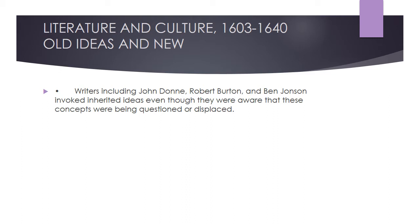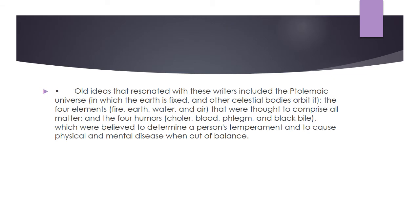Writers including John Donne, Robert Burton, and Ben Jonson invoked inherited ideas, even though they were aware that these concepts were being questioned or displaced. Old ideas that resonated with these writers included the Ptolemaic universe, in which the earth is fixed and other celestial bodies orbited; the four elements — fire, earth, water, and air — that were thought to comprise all matter; and the four humours — choler, blood, phlegm, and black bile — which were believed to determine a person's temperament and to cause physical and mental disease when out of balance.